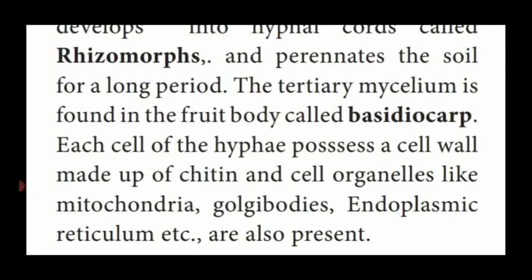The tertiary mycelium is found inside the fruiting body called basidiocarp. The cell wall of Agaricus fungi is made up of chitin, and cell organelles like mitochondria, Golgi bodies, and endoplasmic reticulum are also present inside the cell. This is the vegetative structure of Agaricus fungi.